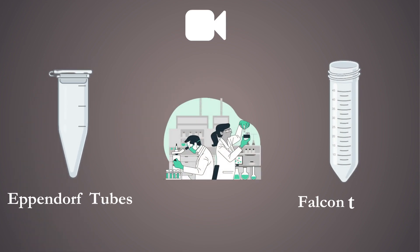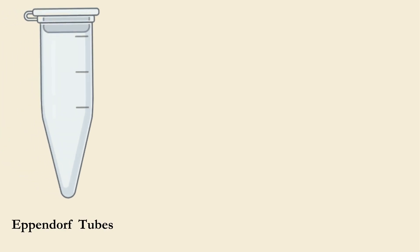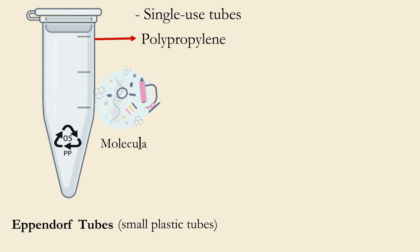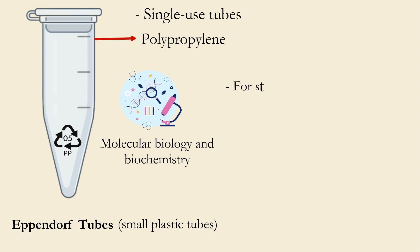Eppendorf tubes and falcon tubes. Eppendorf tubes are single-use tubes made from polypropylene. Eppendorf tubes are small plastic tubes used in molecular biology and biochemistry for storing and handling small volumes of liquids. They are named after the German company that invented them, Eppendorf AG.